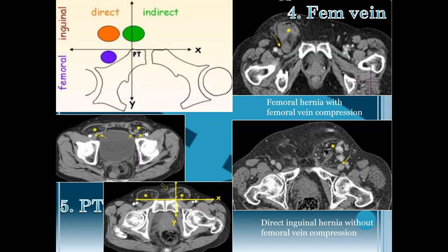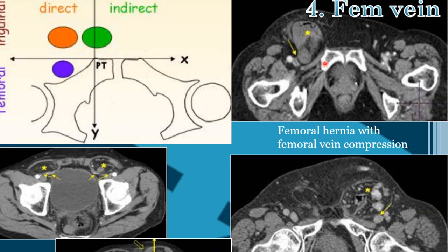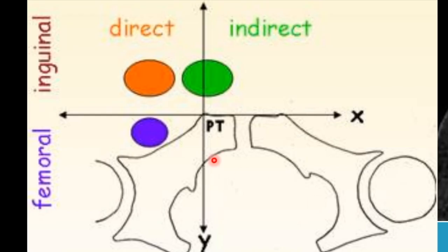The fourth criterion is femoral vein compression. In femoral hernia, the femoral vein is significantly or moderately compressed by the hernia. In contrast, even a larger inguinal hernia does not cause compression of the femoral vein. This is a key criterion to differentiate femoral hernia from inguinal hernia.